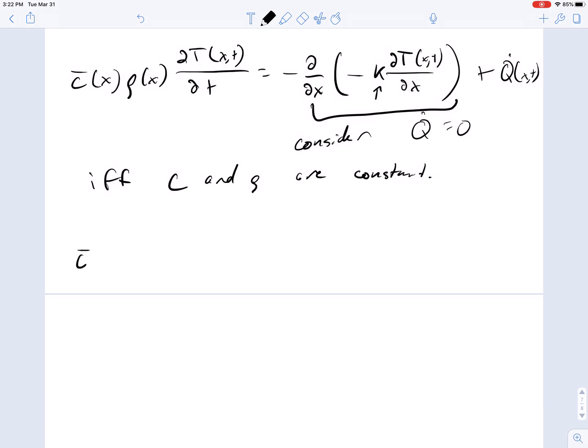So we have C bar rho, del temperature del time. I'm going to get rid of the x and t notation; you can just know that T is temperature of x and time.